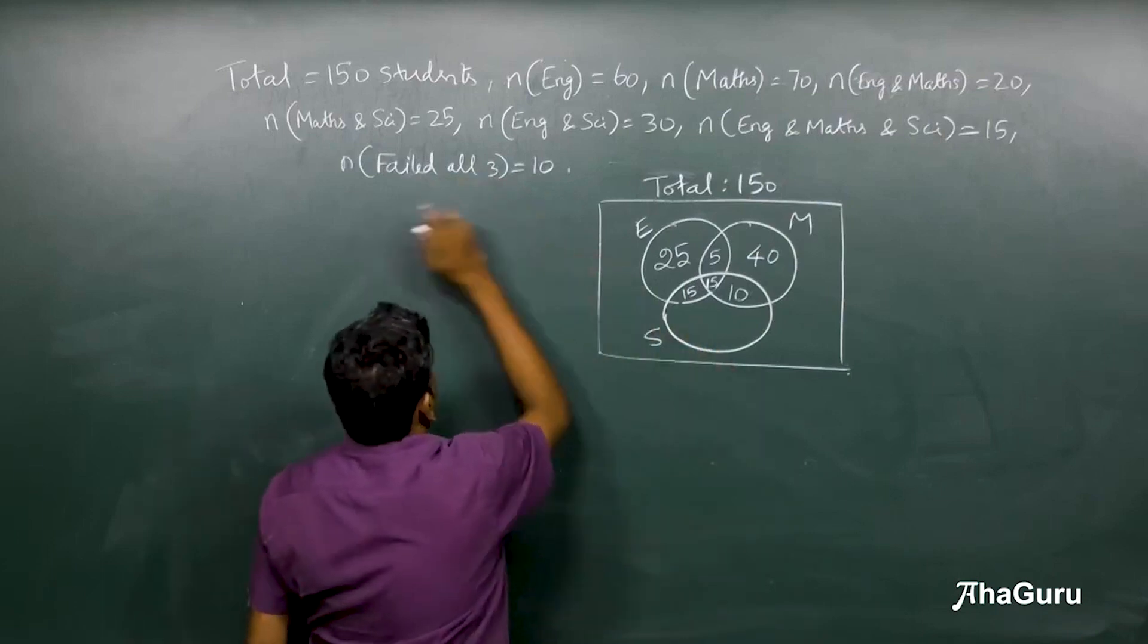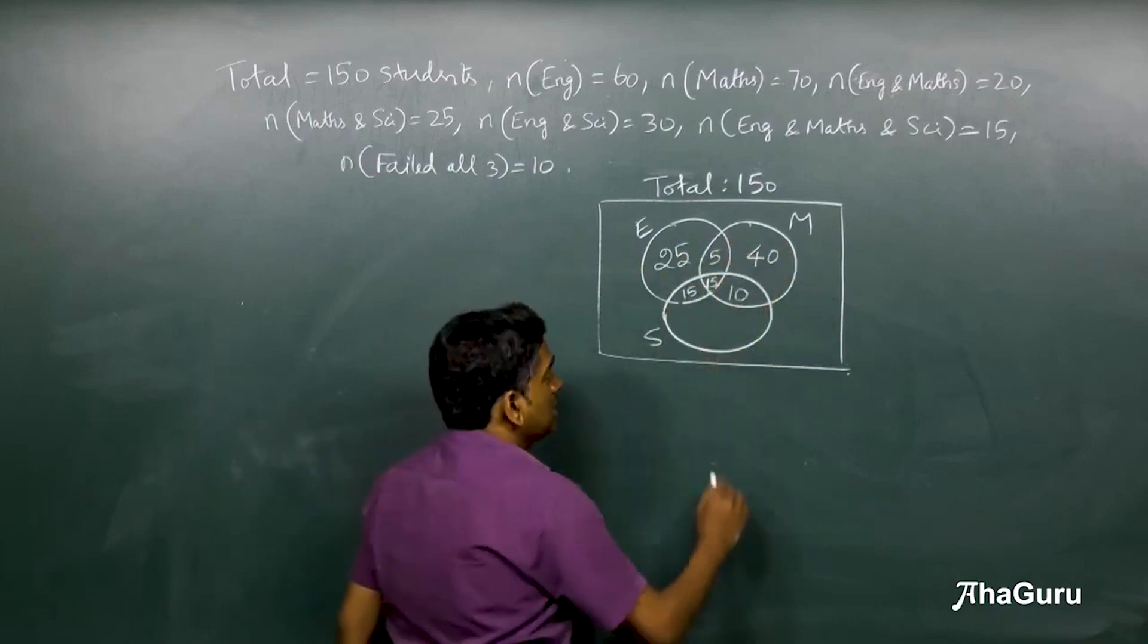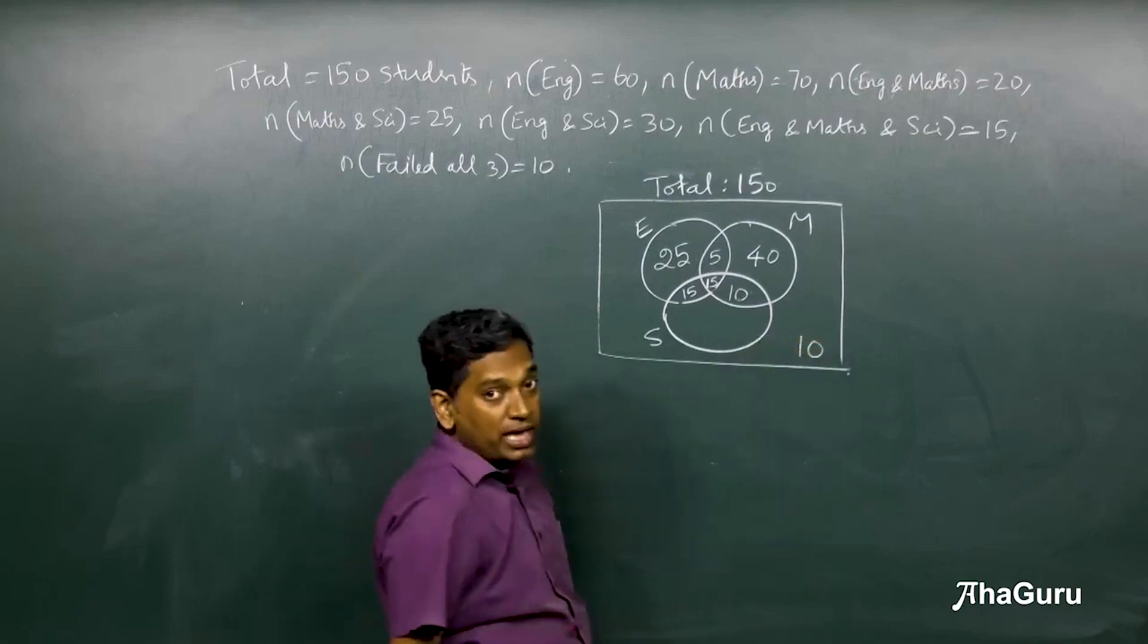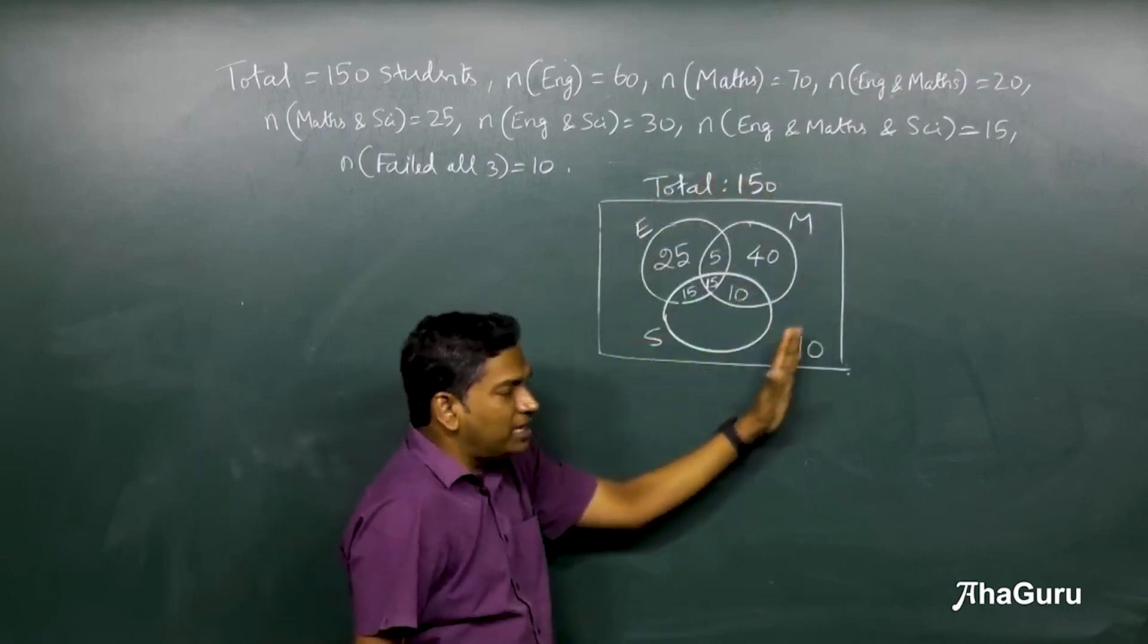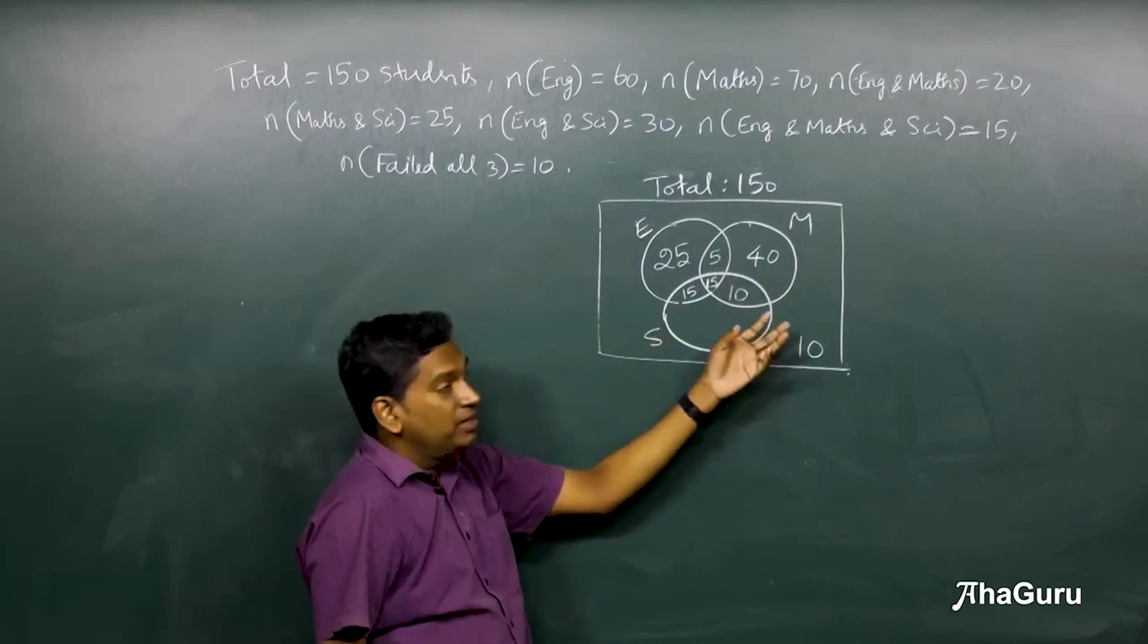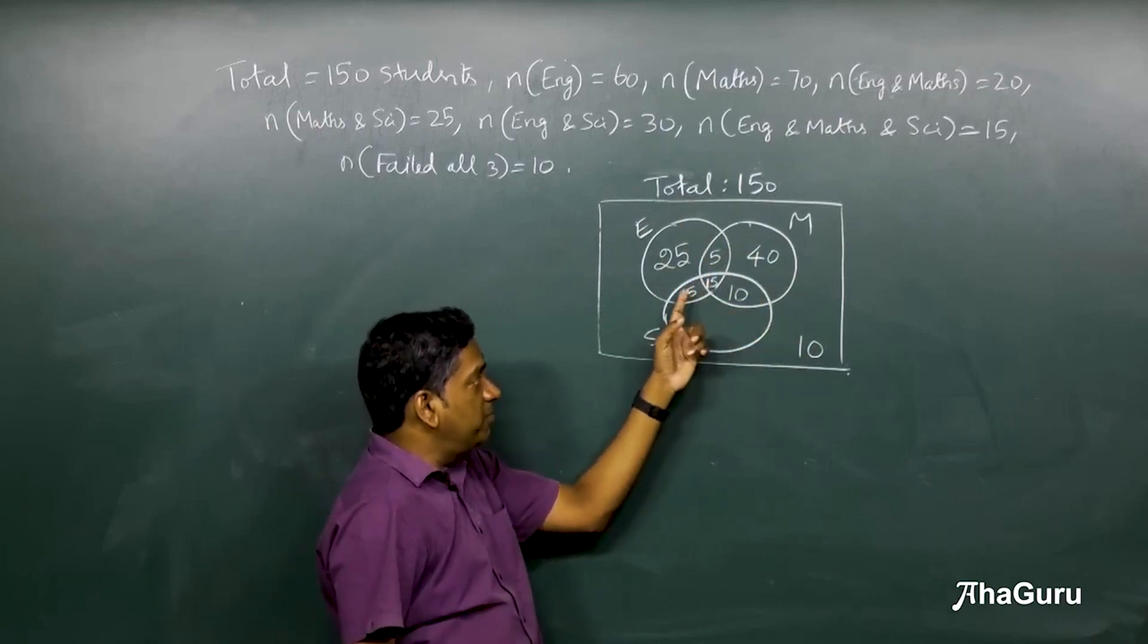The number who failed all the three are the people who don't belong to any of these circles, which is 10. Now you have to see that if you add all the regions inside this box you must get 150 because every single region we have listed.